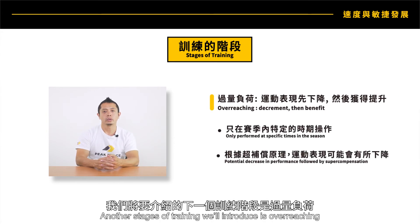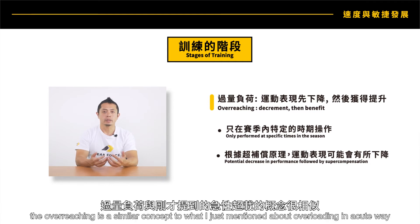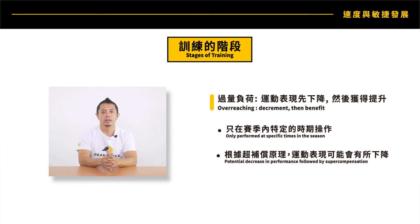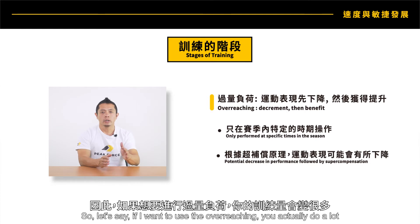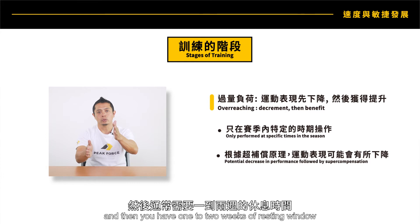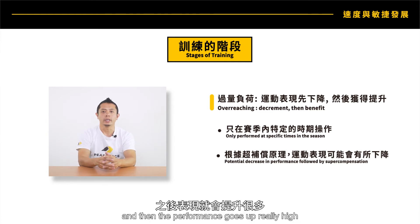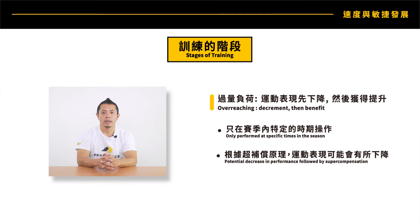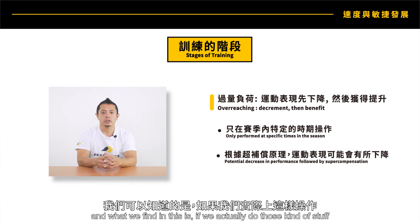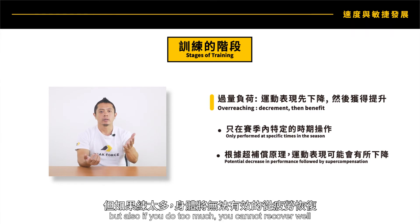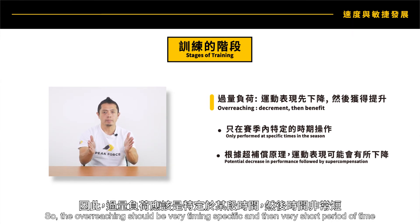Another stage of training is overreaching. Overreaching is a similar concept to acute overloading, but it's a very specific timing in a season. You do a lot and then have one to two weeks of a resting window to fully recover from that overreaching week, and then performance goes up really high. This is called supercompensation. Fatigue management after overreaching is very good, but if you do too much you cannot recover well. So overreaching should be very timing-specific and done in a very short period of time.